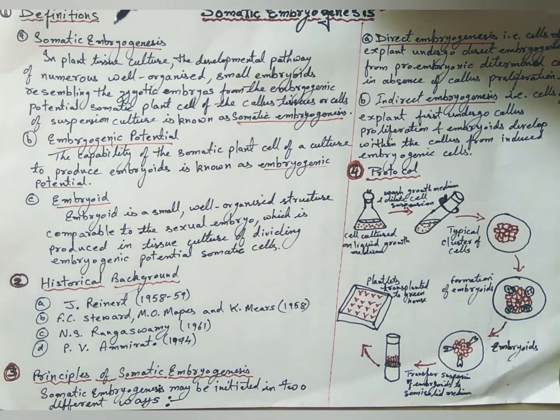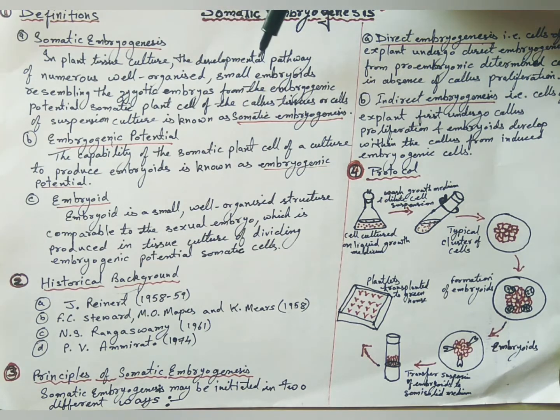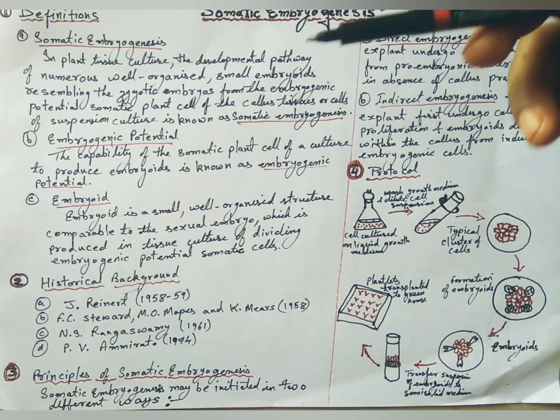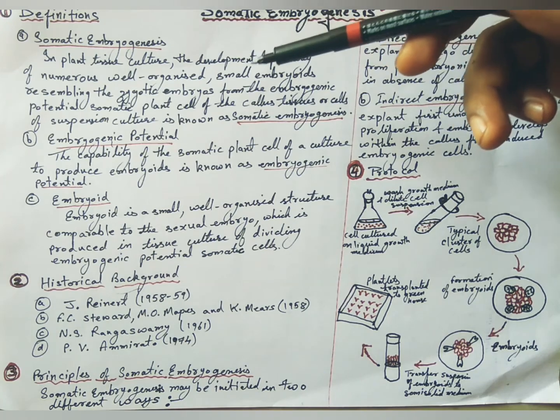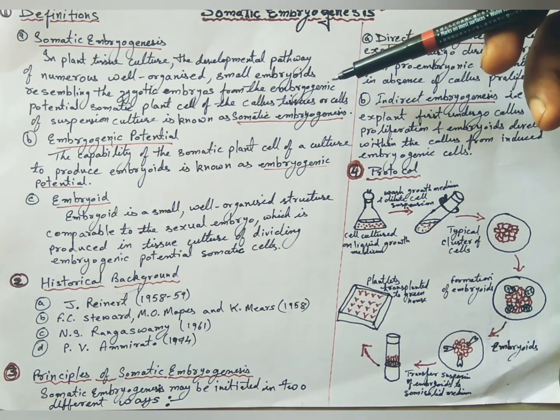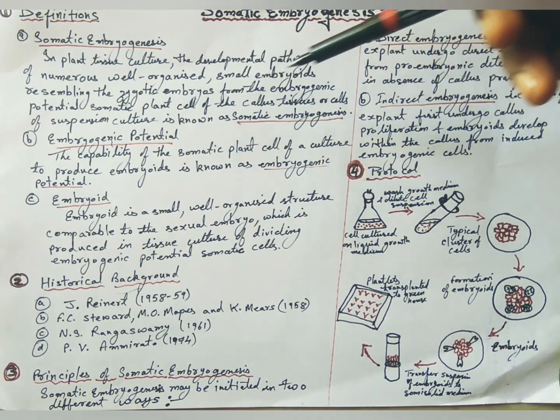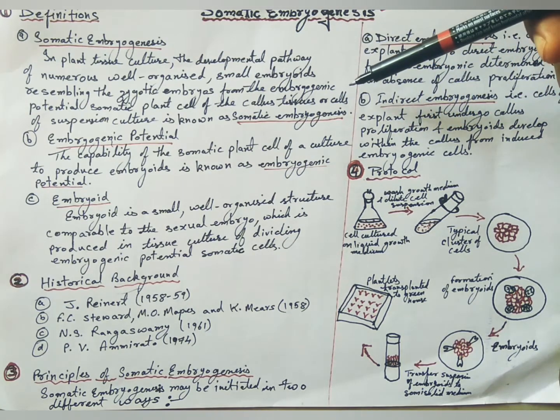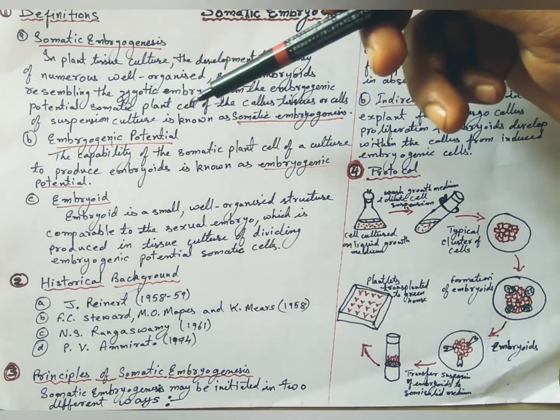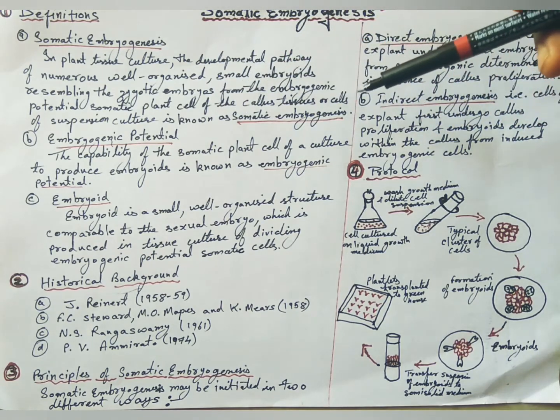Definition: Somatic embryogenesis in plant tissue culture is the developmental pathway of numerous well-organized small embryos resembling the zygotic embryos from the embryogenic potential somatic plant cell of the callus tissues or cells of suspension culture.